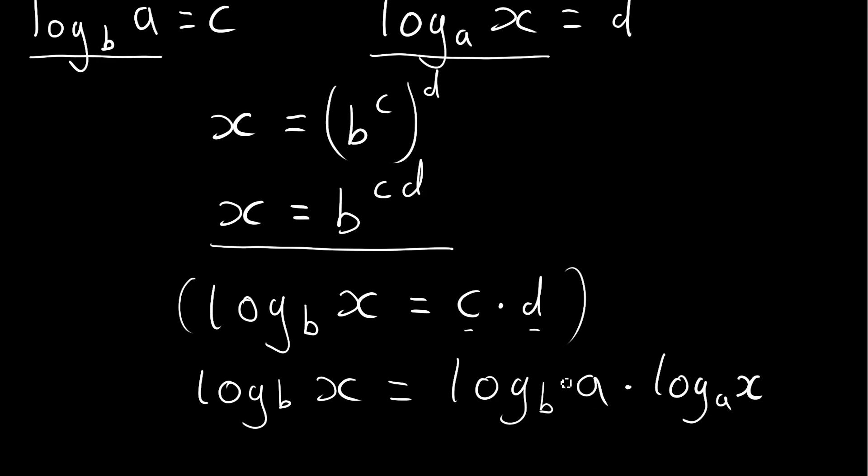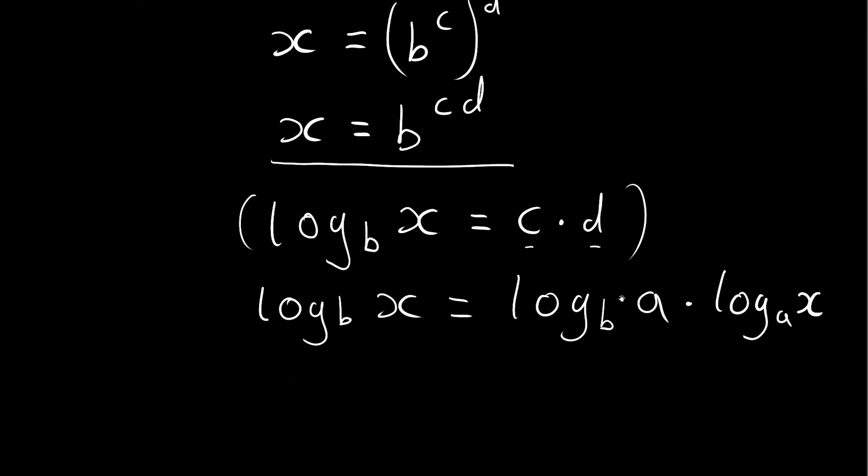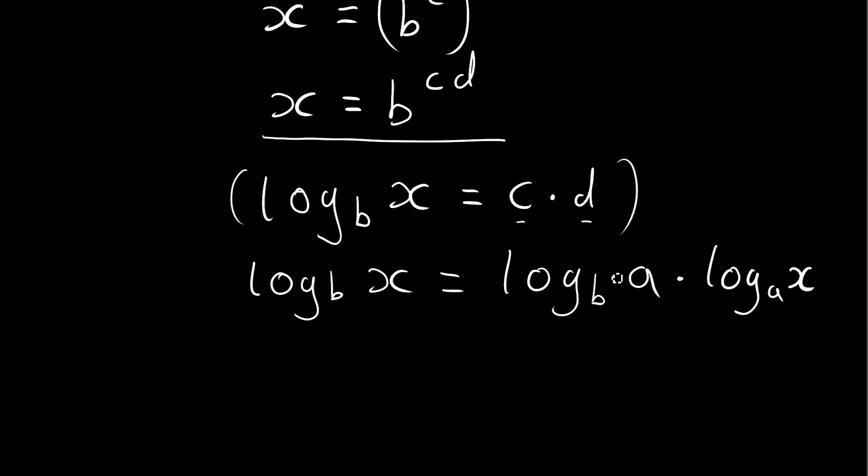Now all we need to do with this equation is transpose it to make this the subject of the equation. So we can divide both sides by log base b to the a. And we get log base b to the x divided by log base b to the a being equal to log base a to the x. And that's our formula.